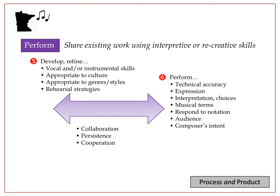There are two benchmarks in the PERFORM process, which is described as sharing existing work using interpretive or recreative skills. Benchmark number 5 is all about skill development — students are developing, refining, and applying vocal and/or instrumental skills. In upper grade levels, students attend to performance skills that are appropriate to the culture, genre, or style of the music they are learning. You and your district colleagues determine the specific skills or techniques your students will develop. Benchmark number 6 is using the skills to perform, focusing on technical accuracy, expression, interpretation, and composer's intent. In only a few grades, performing in response to notation or musical terms is specified.